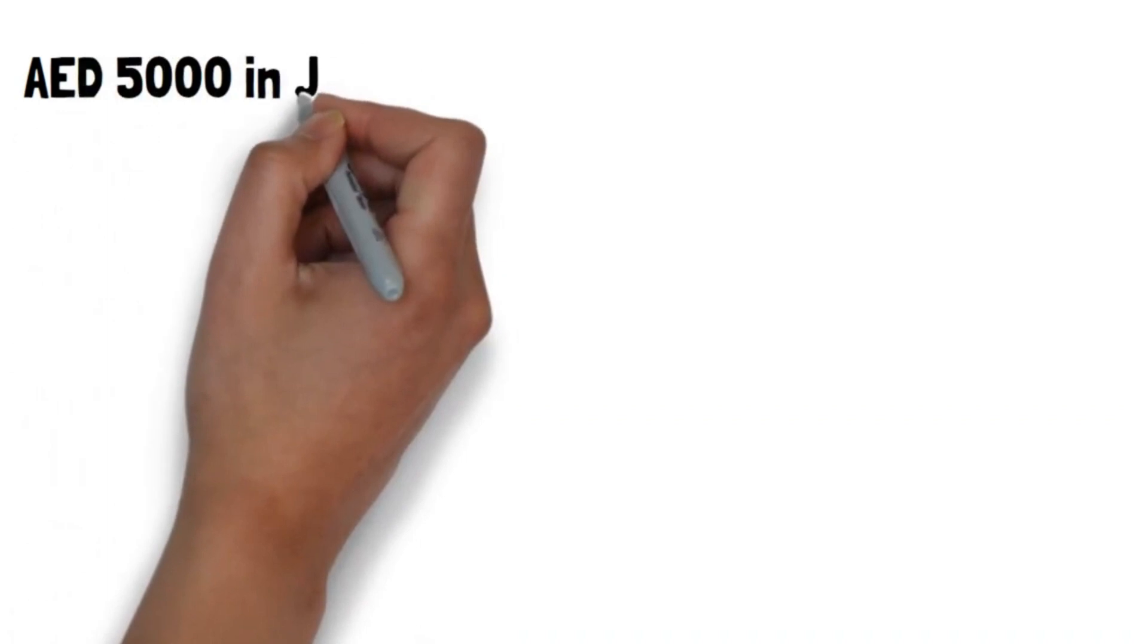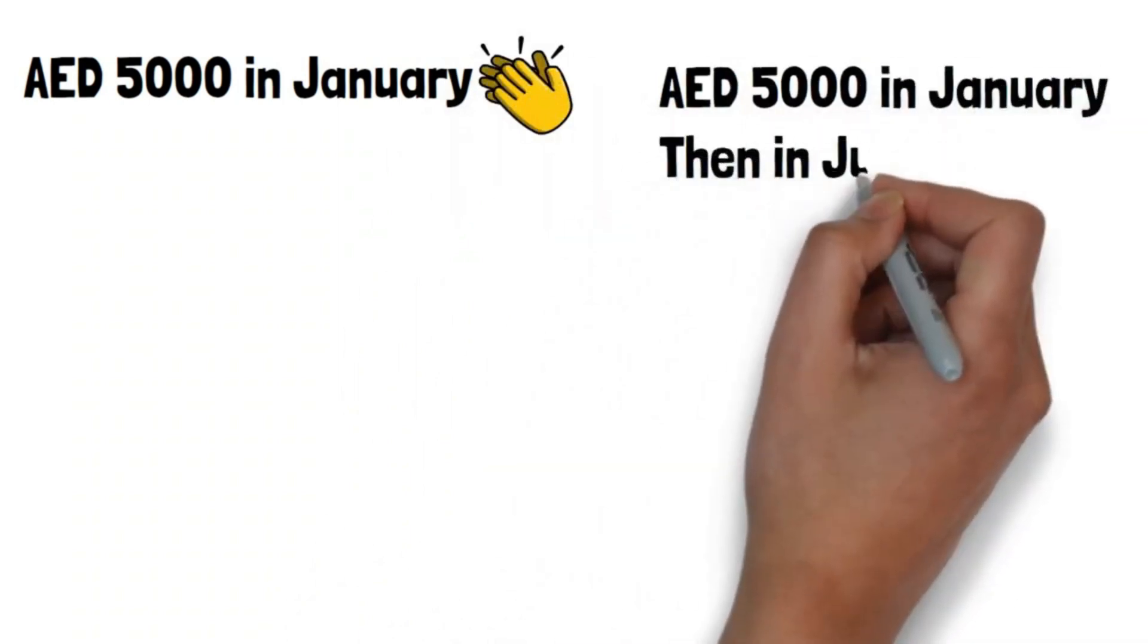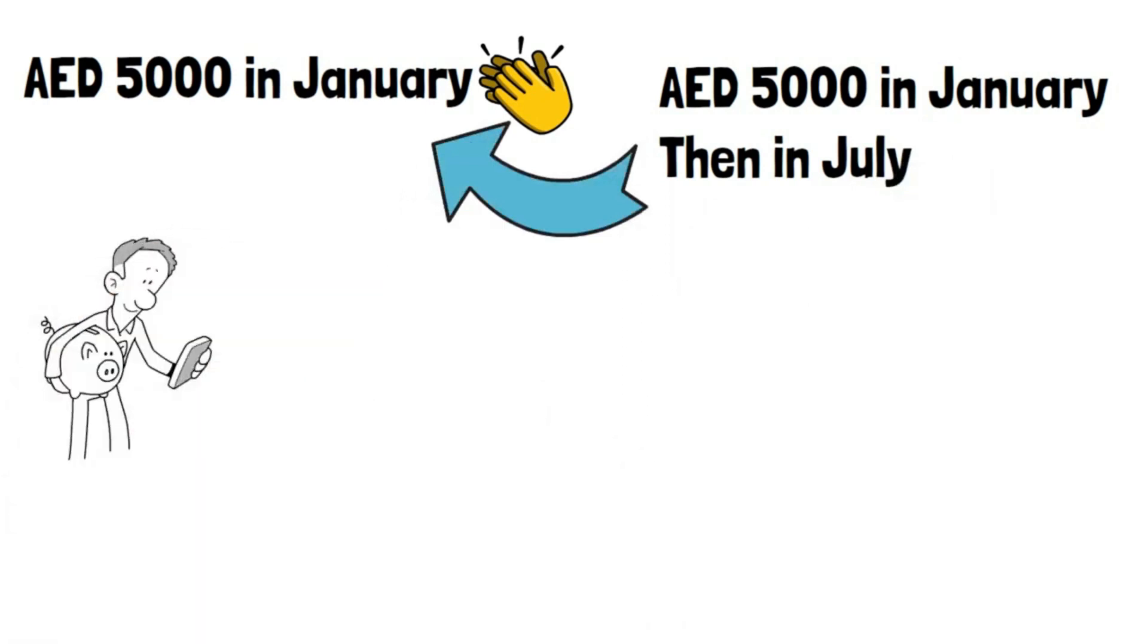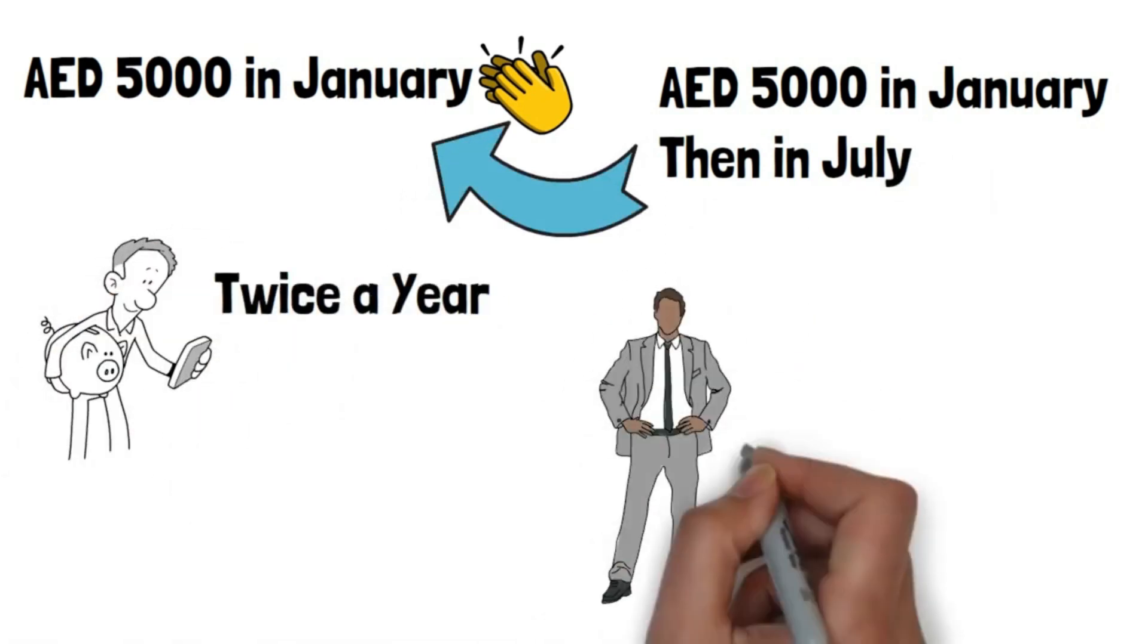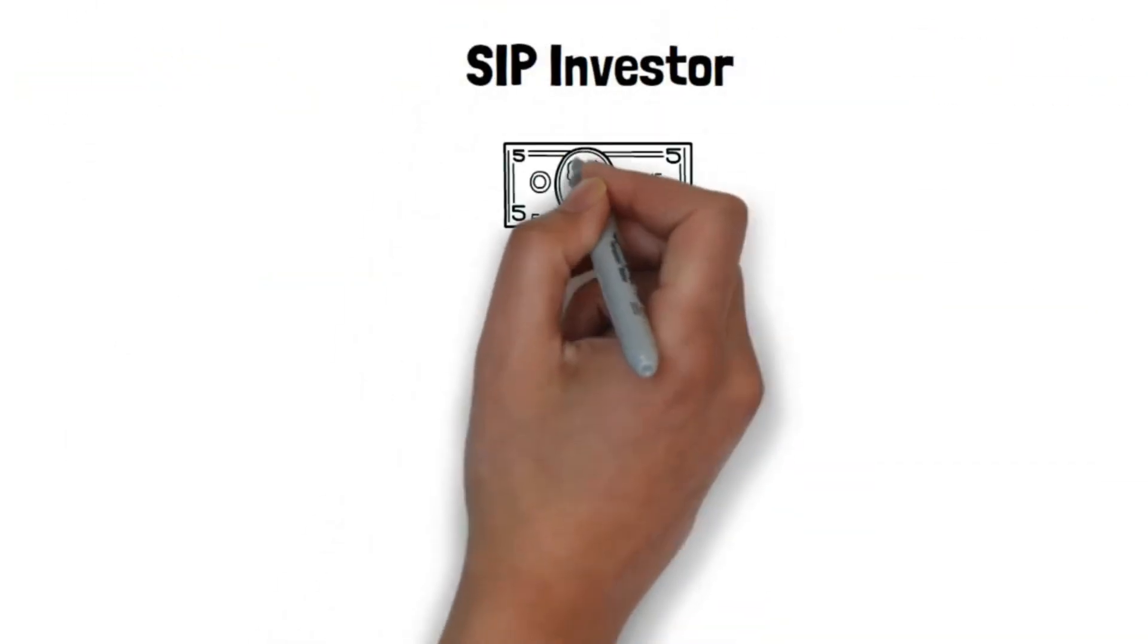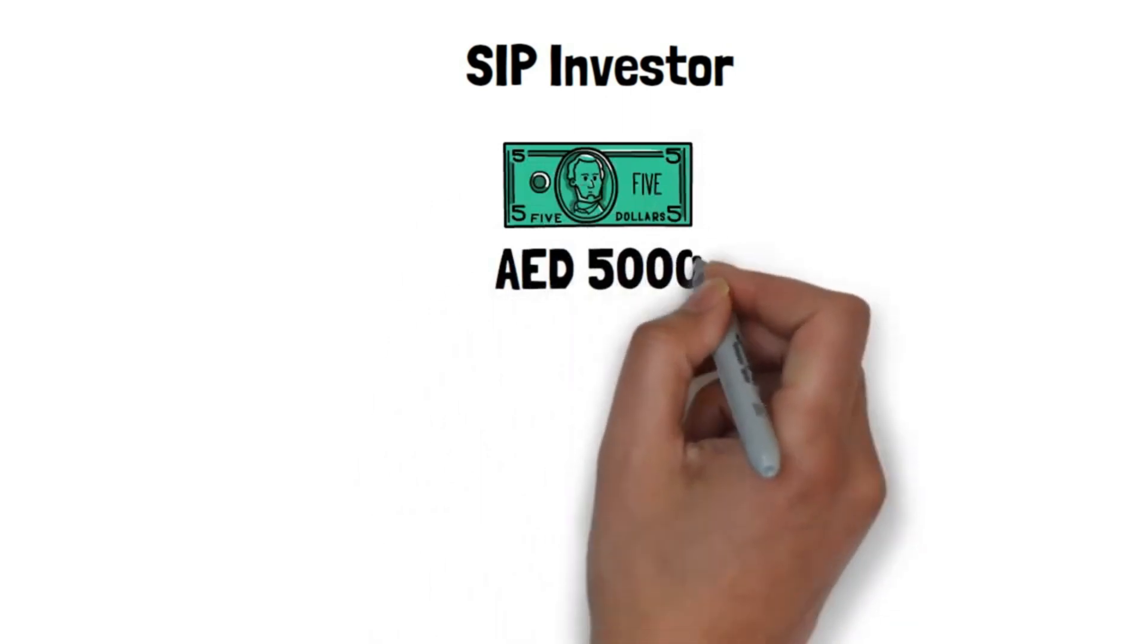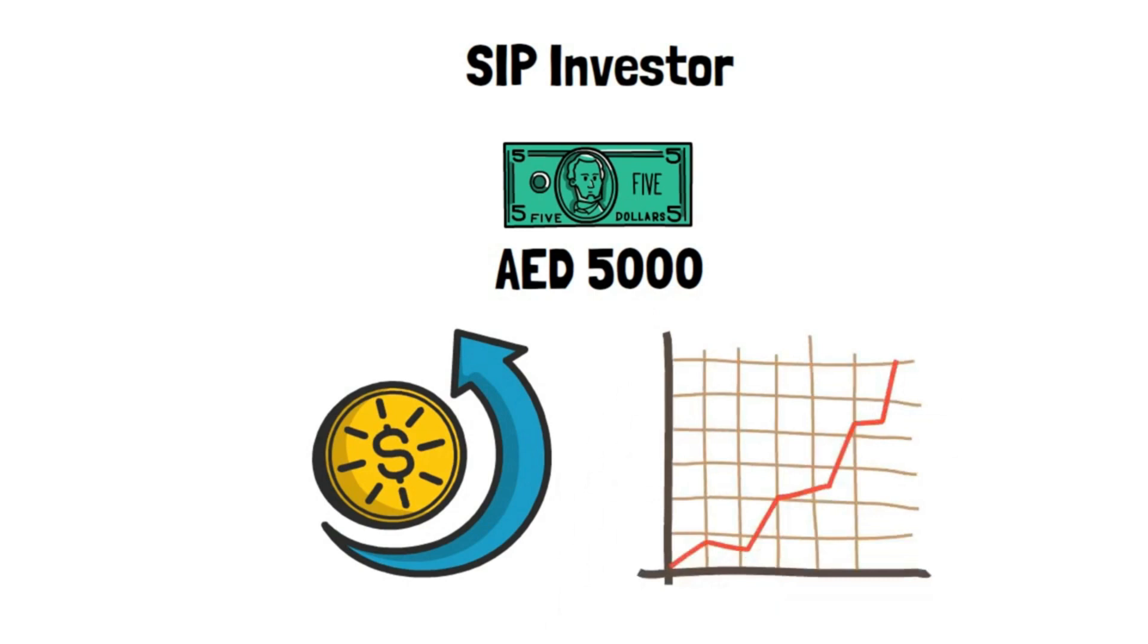However, the individual who invests AED 5000 in January is better off than the person who invests AED 5000 in January and then again in July. When compared to the investor who only invests twice a year, the regular and persistent investor would have earned greater compound returns month after month. The SIP investor makes a monthly investment of AED 5000. In the conditions outlined above, he is the one most positioned to profit from the market.